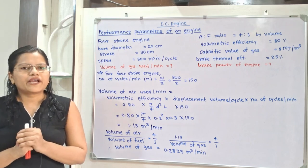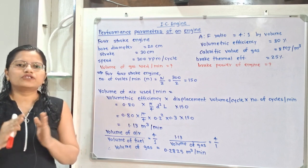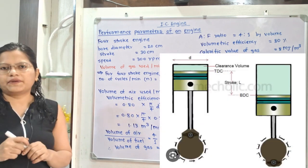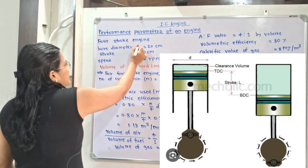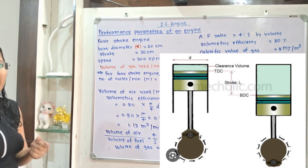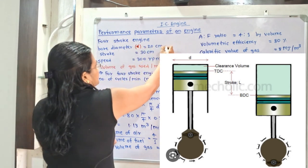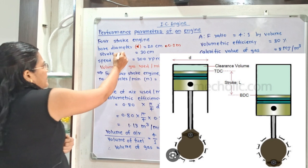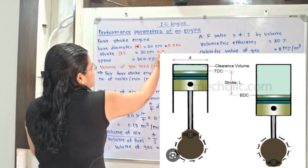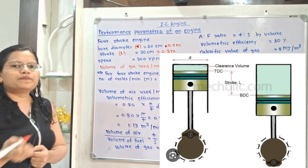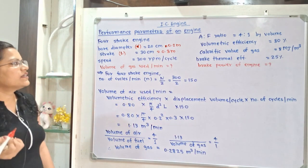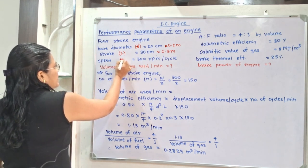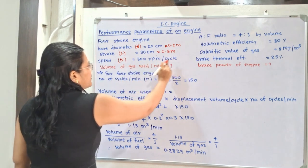Let us understand the given data. This is a 4-stroke engine and bore diameter is given 20 cm. We will use notation small d and convert to standard unit: d = 0.2 meter. Stroke length, capital L, is equal to 30 cm, that is 0.3 meter. Speed, capital N, is equal to 300 rpm.